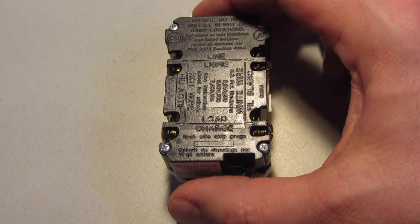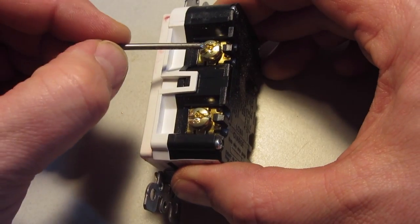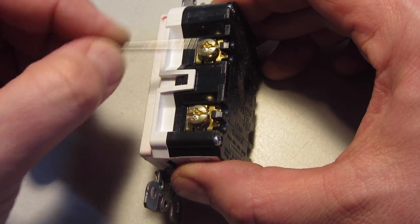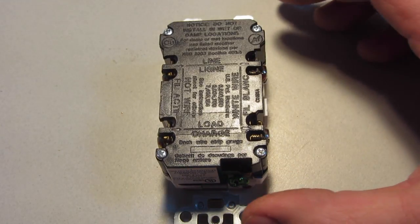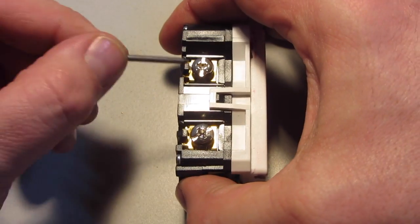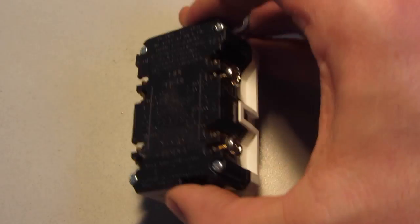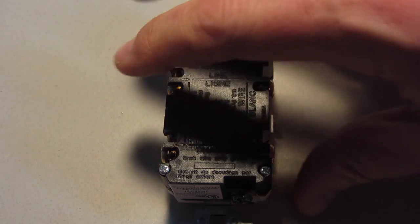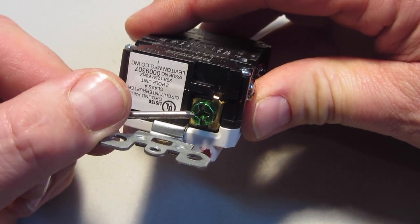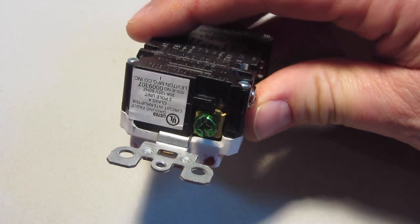The black wires, which are the hot wires, will be connected to the gold screws. The white wires, which are neutral wires, will be connected to the silver screws. There is also a green screw, which takes the ground wire.